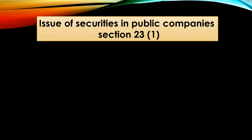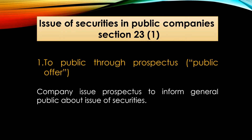Public company किस किस तरह से अपने shares को या अपने securities को issue कर सकती है? Number 1 is to public through prospectus, यानि कि public offer. Public companies अपने shares general public को issue कर सकती है through prospectus. Means company अपना prospectus issue करती है general public को - किस लिए? About the issue of securities.